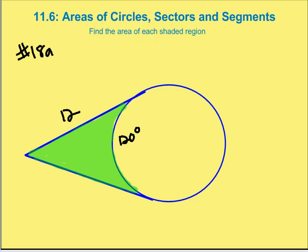First problem: I need to find the area of the shaded region. I'm given two tangents with both side lengths of 12. So what I'm going to do is identify the center of the circle, and then draw a line from the intersection of the two tangents to the center of the circle.